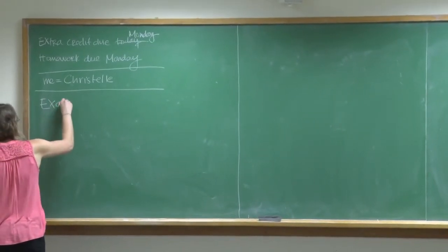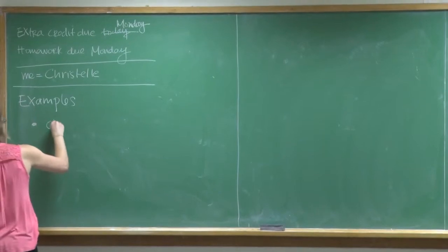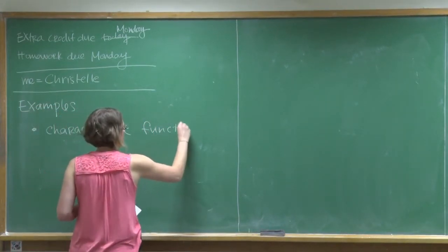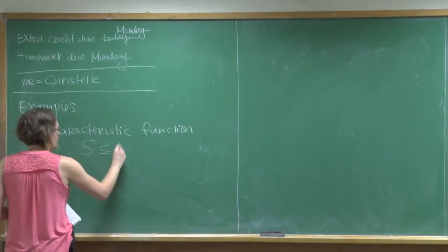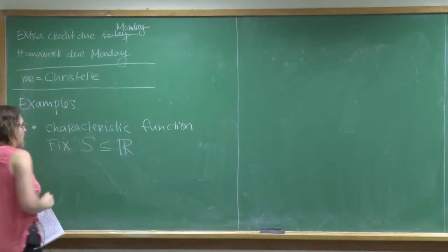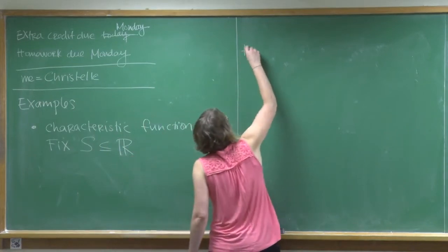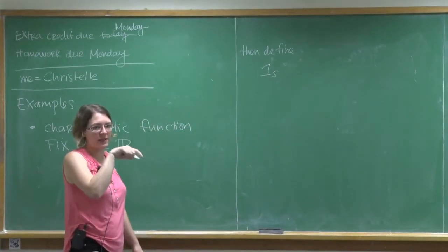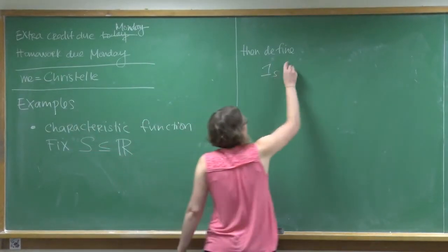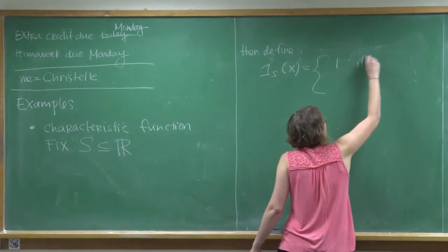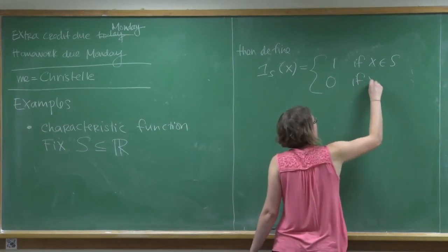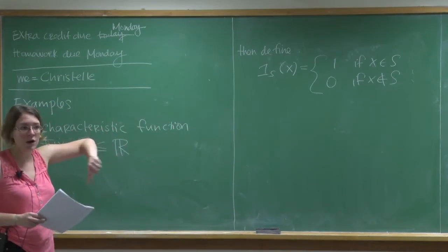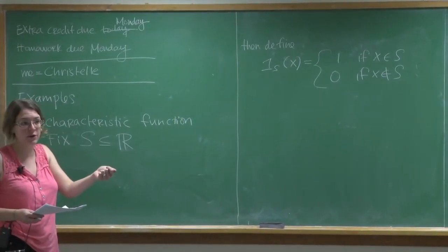Our first example is called the characteristic function, which shows up in analysis. If S is a subset of the real numbers, I can define 1_S of X to equal 1 if X is an element of S, and 0 if X is not an element of S. So if you take 1 to be yes and 0 to be no, this is a function that you give it a number and it tells you if it's in the set or not.